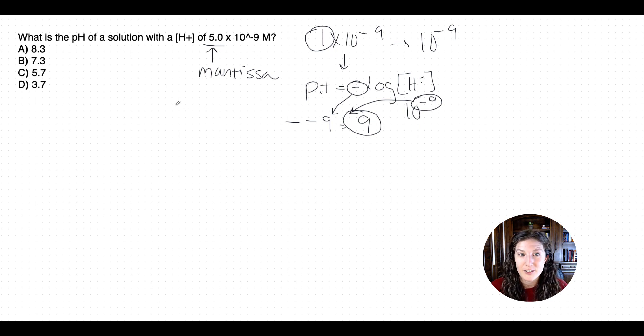Now the second step I want you to do is move the mantissa into the tens place. What would be the pH if it was 10 times 10 to the negative 9? Well, the first thing to do is convert it so that our mantissa is 1. So 10 times 10 to the negative 9 is the same thing as saying 1 times 10 to the negative 8. We just move the tens place over and make this number bigger, closer to 0. 1 times 10 to the negative 8 would give us a pH of 8. Now we have our range because 5 is in between 10 and 1, in between these two mantissas. And that range in pH would give us a range of 8 to 9. So we know that our pH is somewhere in between 8 and 9.